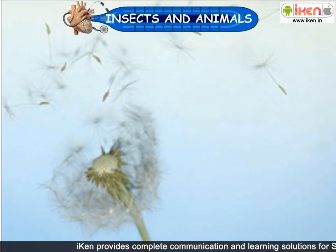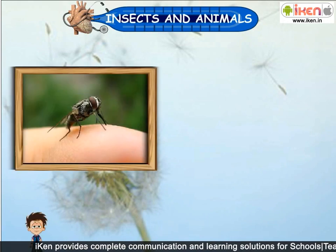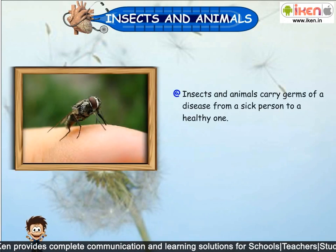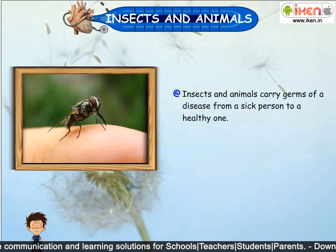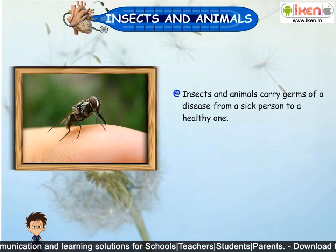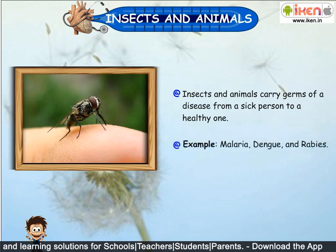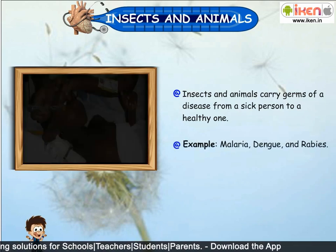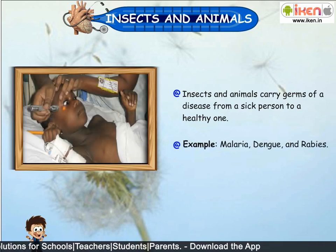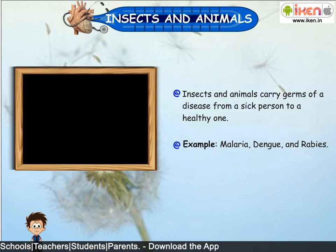Insects and Animals: Insects and animals carry germs of a disease from a sick person to a healthy one. For example, malaria, dengue and rabies.